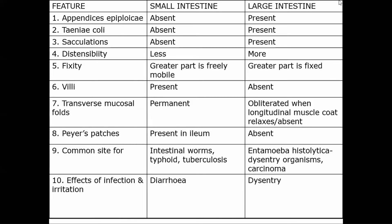Last time we studied the rectum and anal canal, finishing the small intestine and large intestine. The differences between them: in the small intestine there is an absence of appendices epiploicae, taenia coli, sacculation, and haustra, whereas these structures are present in the large intestine. Appendices epiploicae, taenia coli, and sacculations are characteristic features of the large intestine.